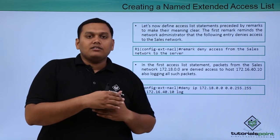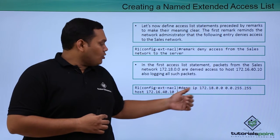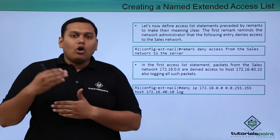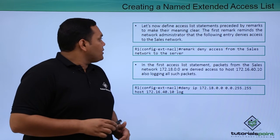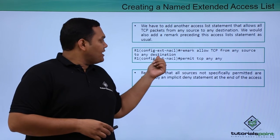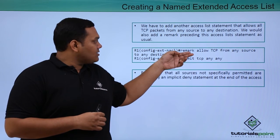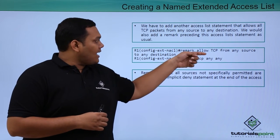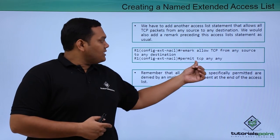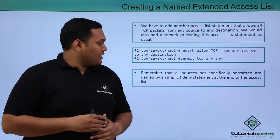That IP address should not access the host, so we are denying it from reaching that host IP address and logging any access attempts. We also need to allow TCP from any source to any destination. In the extended named access list, a remark is added: allow TCP packets from any source to any destination, and the permit statement is 'permit TCP any to any'.